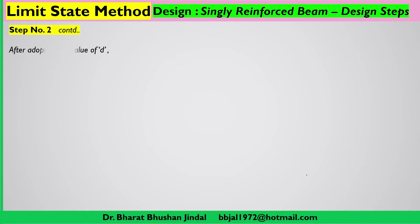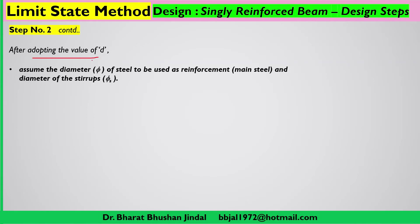Continuing step two: after deciding the effective depth of the section, write it as 'let us adopt effective depth d = [value] mm'. Next, assume the diameter of the main steel bars to be provided as tensile reinforcement — this can be assumed as per availability of steel bars in the market or as per IS code.